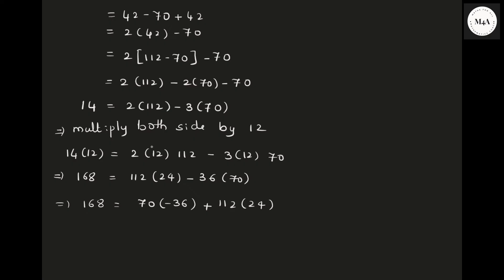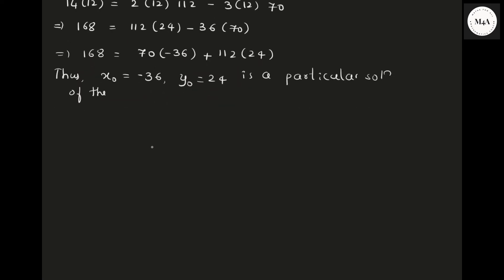Compare this with your main equation. When you compare, x-naught is minus 36 and y-naught is 24 — this is a particular solution of the given equation. Once you get an initial solution, then we need to write the general solution.